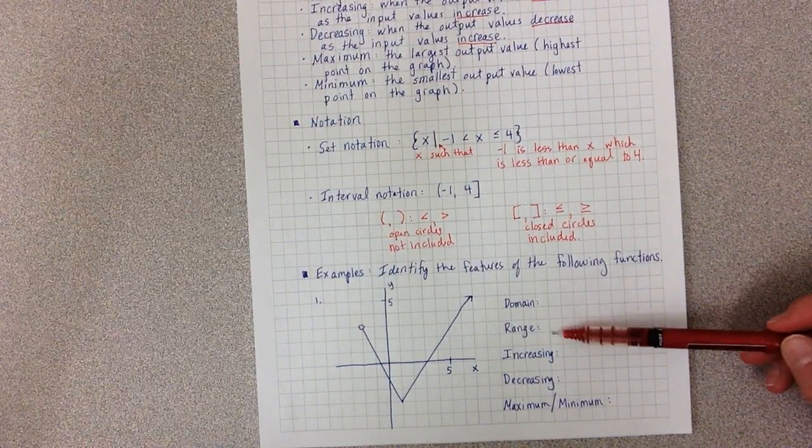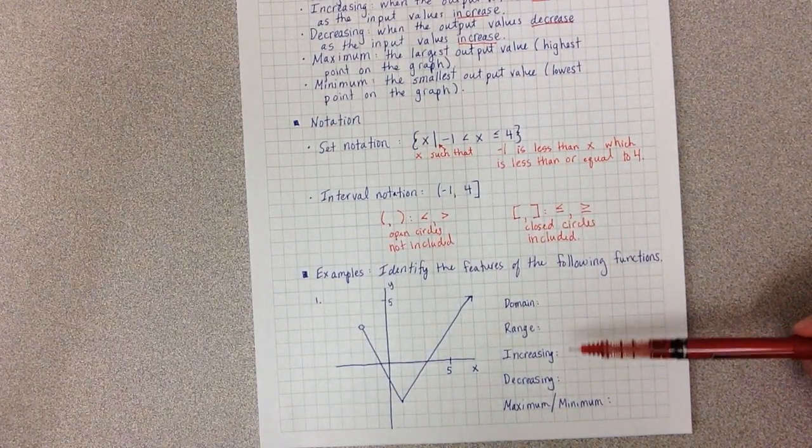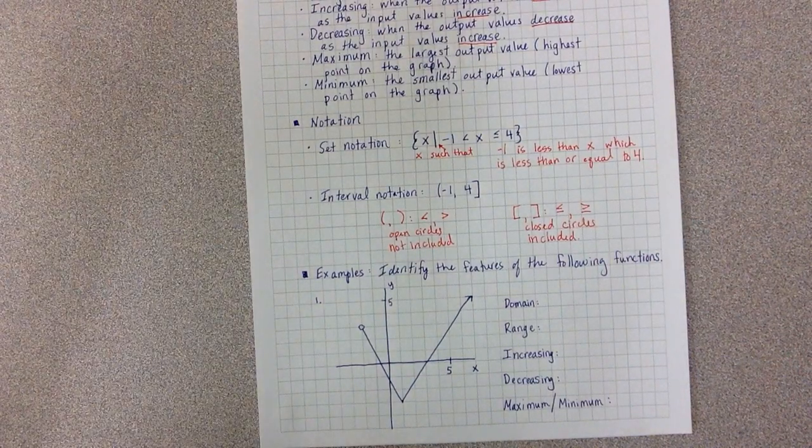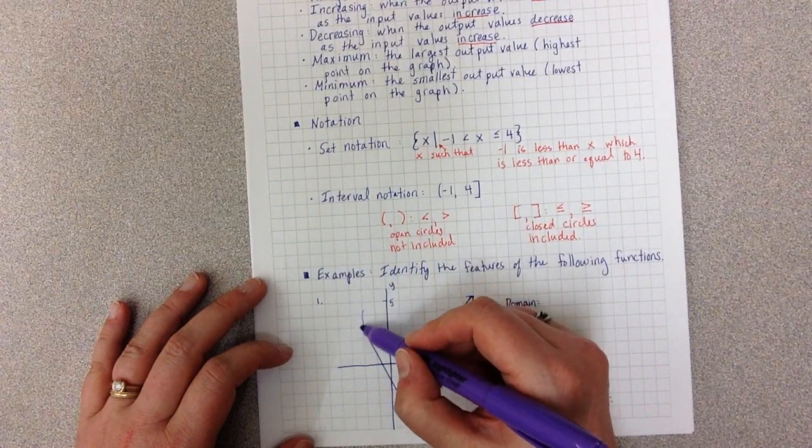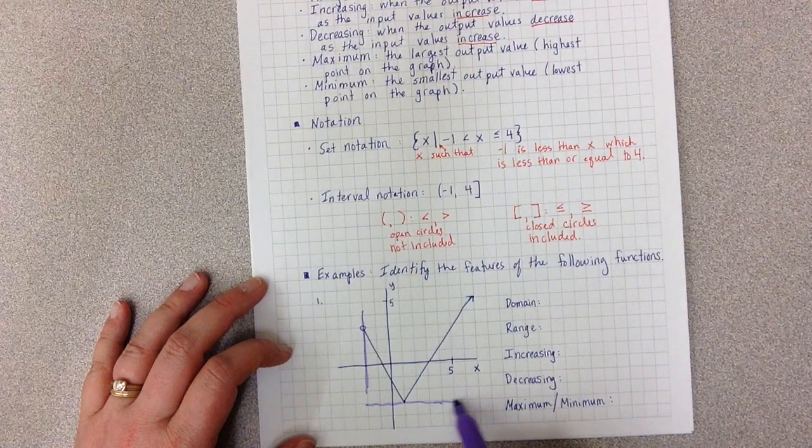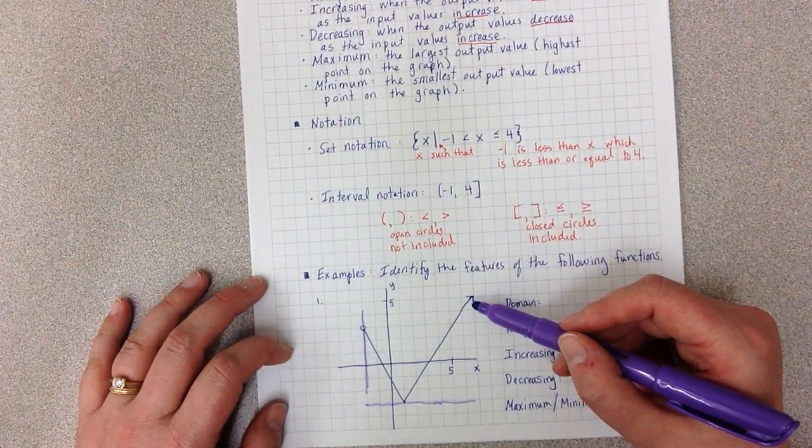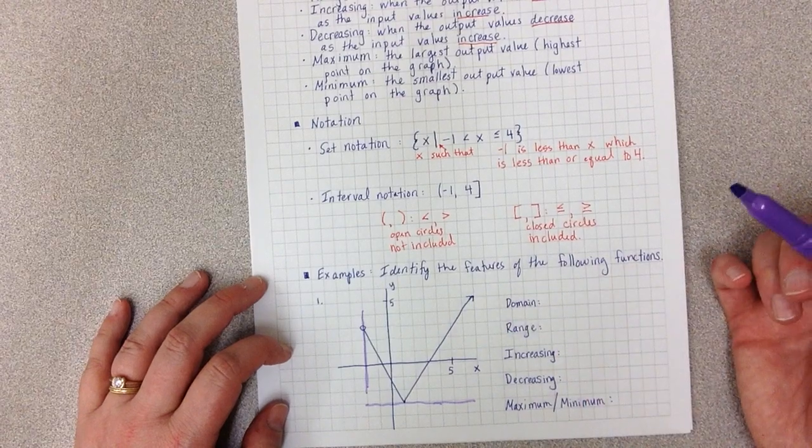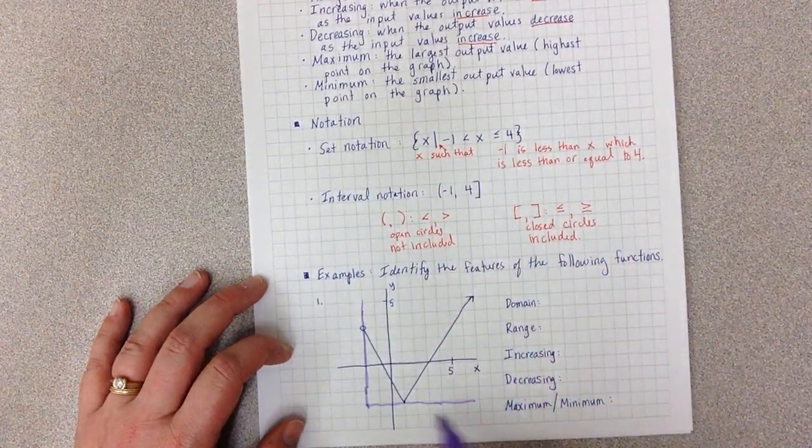So for the domain and range, it's often helpful with these to almost kind of draw a box around the function. So I can see here that my box ends over here, or begins, ends down here. And then this arrow tells me that I don't end. So I can't really finish my box. It keeps going.